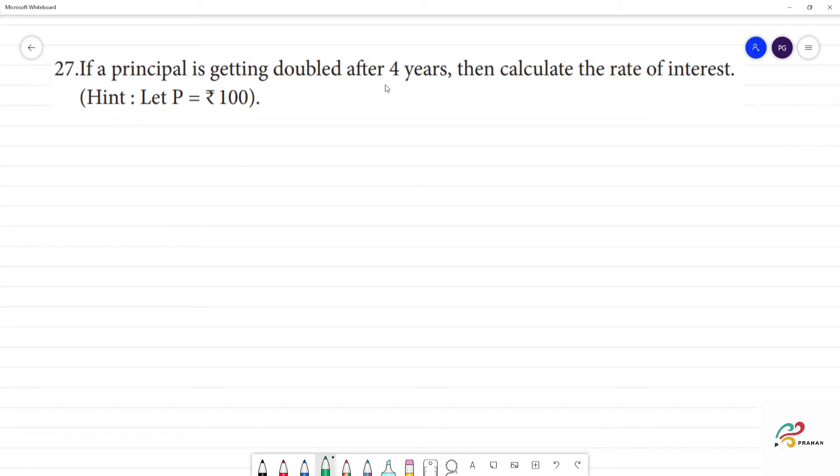The principal is getting doubled after 4 years, then calculate the rate of interest. Now, we can get a hint of principal. We can set the principal as ₹100.